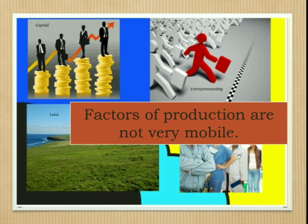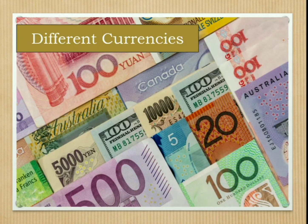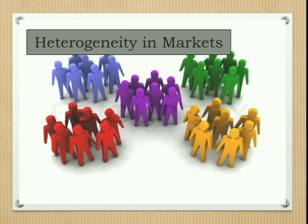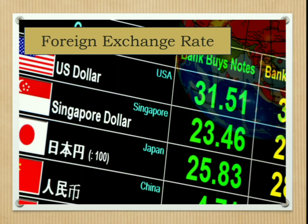In the case of internal trade, factors of production are mobile, but in international trade, factors of production are not very mobile. Next, regarding different currencies: in internal trade there is only one currency, but in international trade different currencies are involved. International trade is also characterized by heterogeneity in language, climate, culture, and level of economic development.